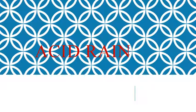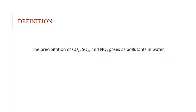Now we are going to see the topic called Acid Rain. Acid Rain is one of the important topics given in our 4th chapter. The definition of Acid Rain is the precipitation of Carbon Dioxide, Sulphur Dioxide, and Nitrous Oxide gases as pollutants in water. We all know that normal rain water is always slightly acidic in nature.